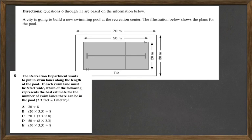Question 8 reads, the Recreation Department wants to put in swim lanes along the length of the pool. If each swim lane must be 8 feet wide, which of the following represents the best estimate for the number of swim lanes there can be in the pool?